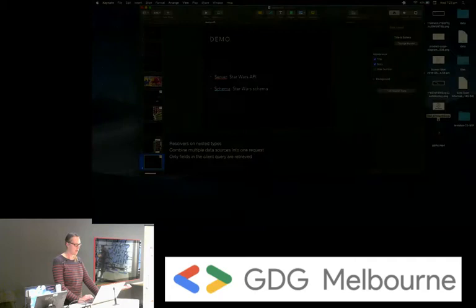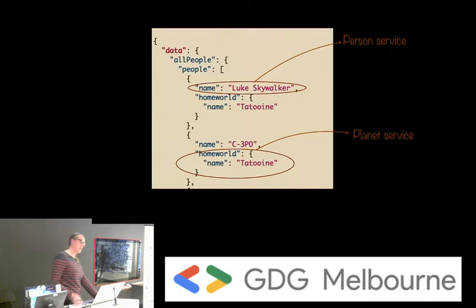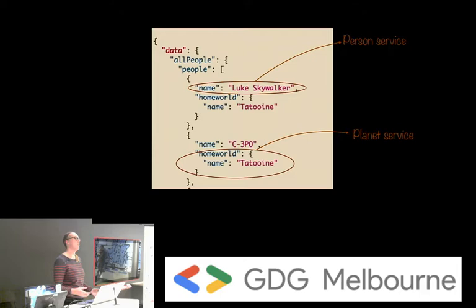Just to recap with an example: the name is being fetched from the person service, and the homeworld is being fetched from the planet service. This is how we aggregate all of our microservices into one place so they can be queried from the client side.